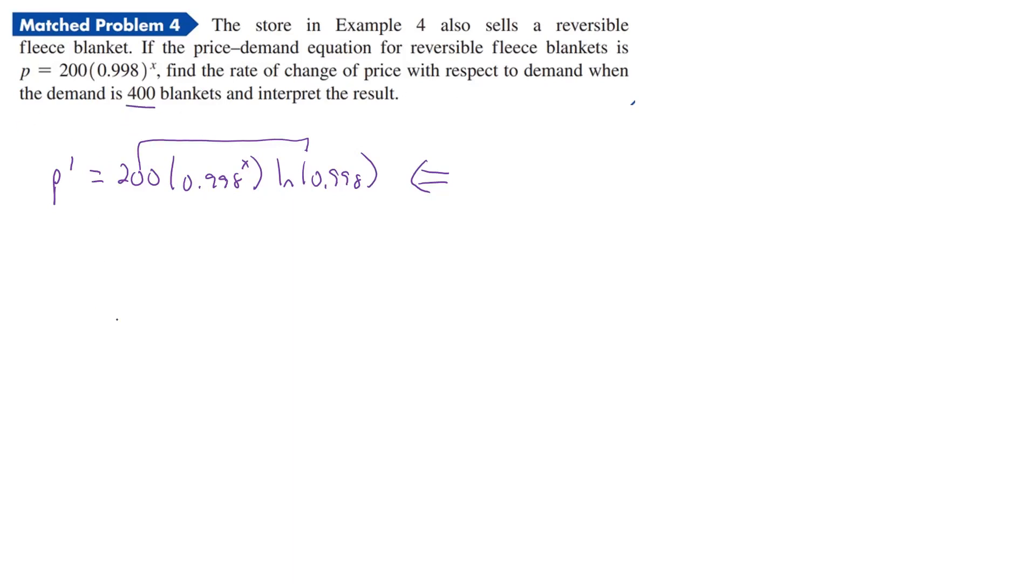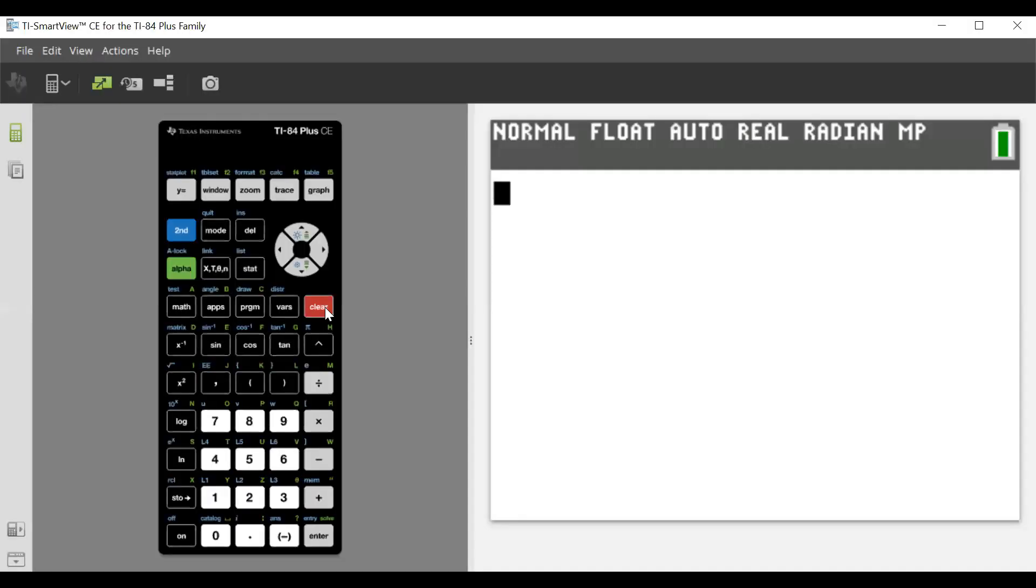But it does say, what is the demand when it's 400 blankets? Well, so that means we want to find p prime of 400. All right, so that's then what we're going to have to find, and we'll type that into our calculator. So if we do that in our calculator, we have the 200 times, then we had 0.998 to the power, and we were doing 400 blankets, lower the power back down, and then we'll multiply by the ln of 0.998.